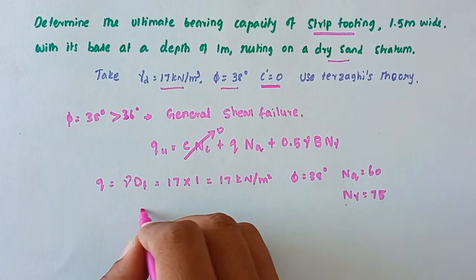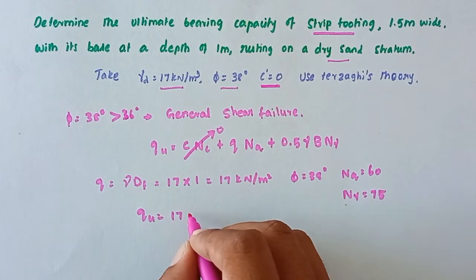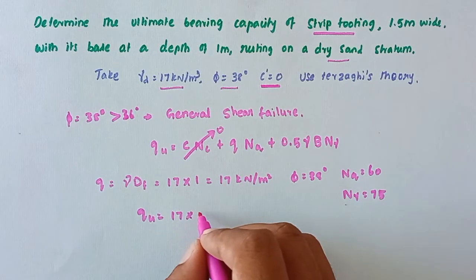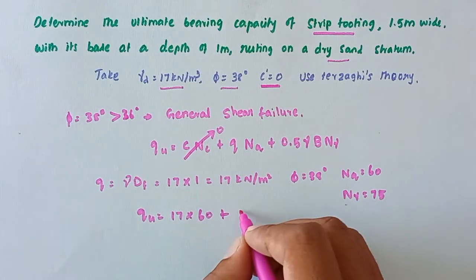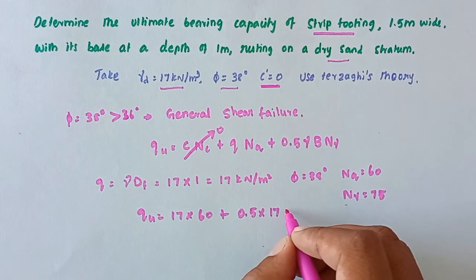now we can substitute all the values. qu = now q value is 17 into the Nq value is 60 plus 0.5 into gamma value is 17 into